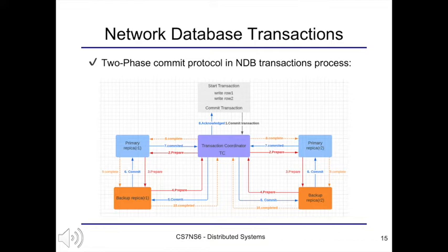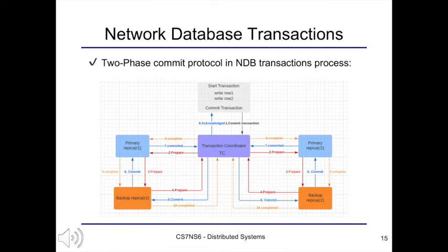A two-phase commit protocol is used to commit a transaction writing rows to two different partitions. First, the transaction coordinator sends a prepare message to the primary replica, which propagates it to the backup replicas until it reaches the last backup replica, which sends the prepare message back to the transaction coordinator. Then the commit message is sent in reverse order to the last backup replica. Once the commit message reaches the primary replica, the logs are released and a commit message is sent to the transaction coordinator. Once the coordinator receives all commit messages from all primary replicas, the transaction is committed and an acknowledgement is sent to the application.